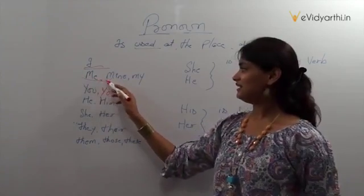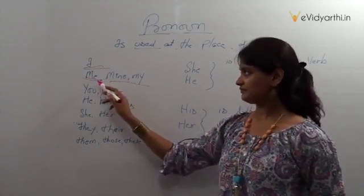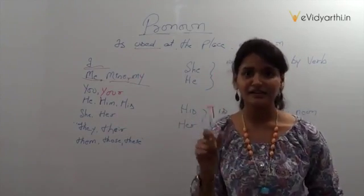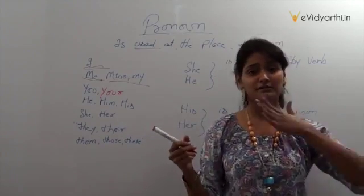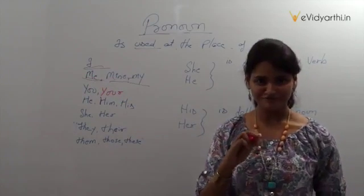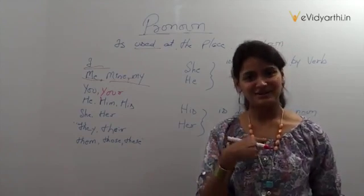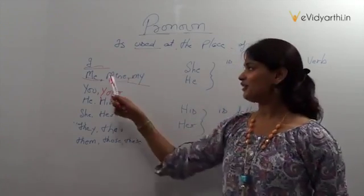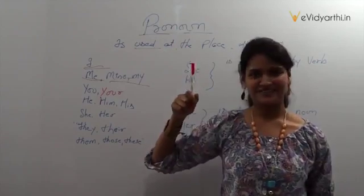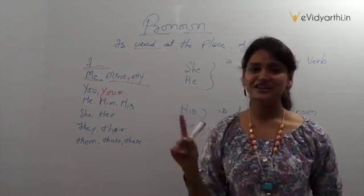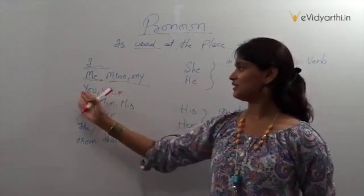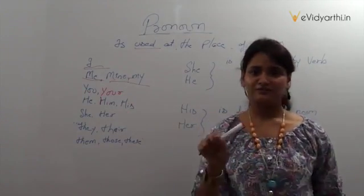Similarly, 'me,' 'my,' and 'mine' are also pronouns. 'This marker belongs to me' — I have not said 'this marker belongs to Anupriya.' 'This marker is mine' or 'this is my marker' — yeh mera marker hai. Again, I am not using the noun 'Anupriya,' which is a proper noun and my name. I am using such pronouns in its place.